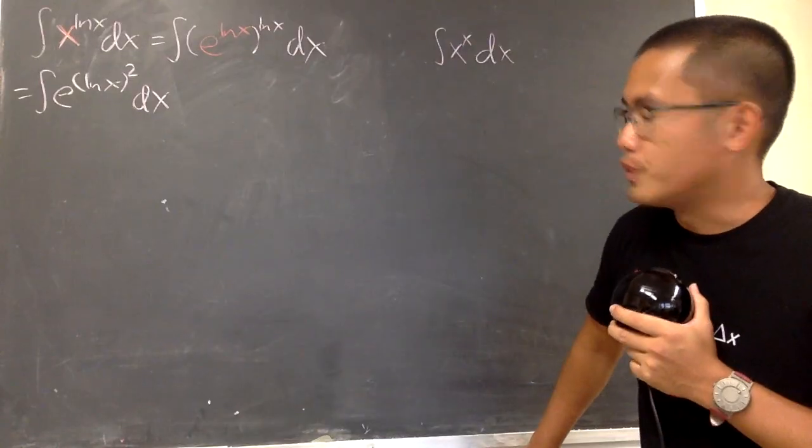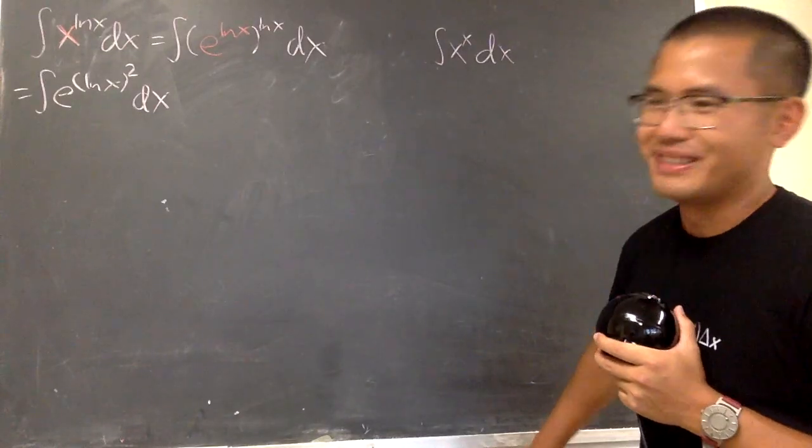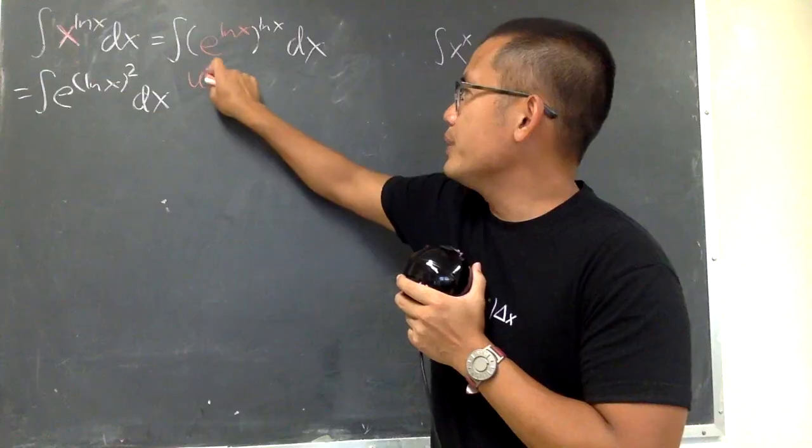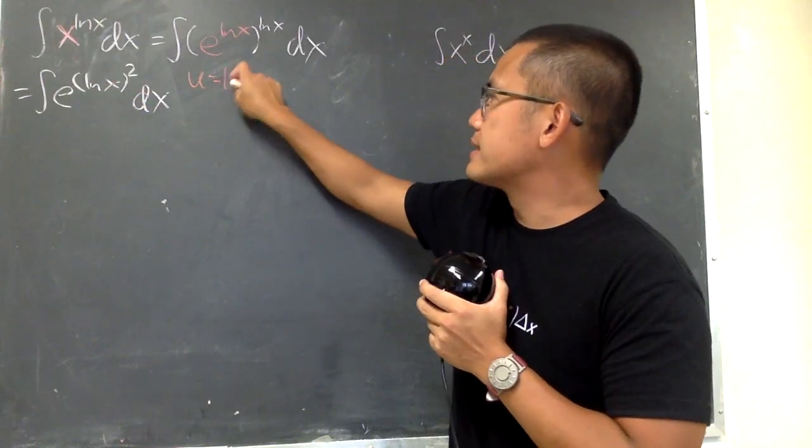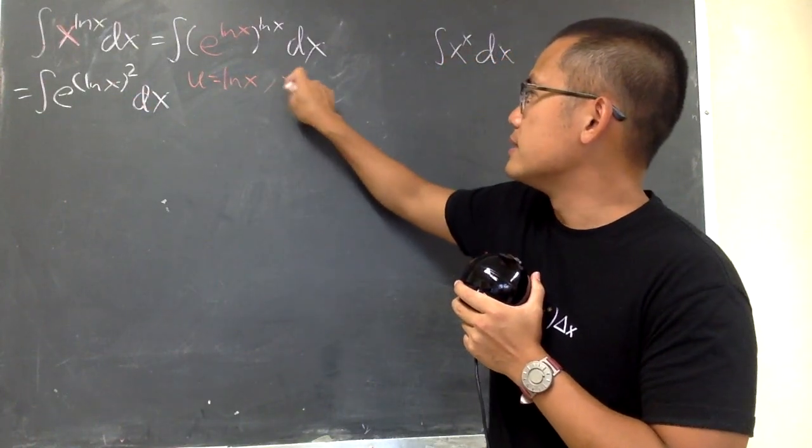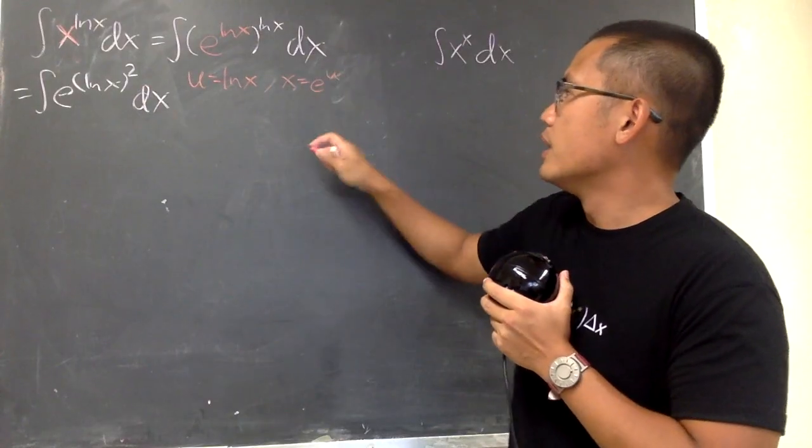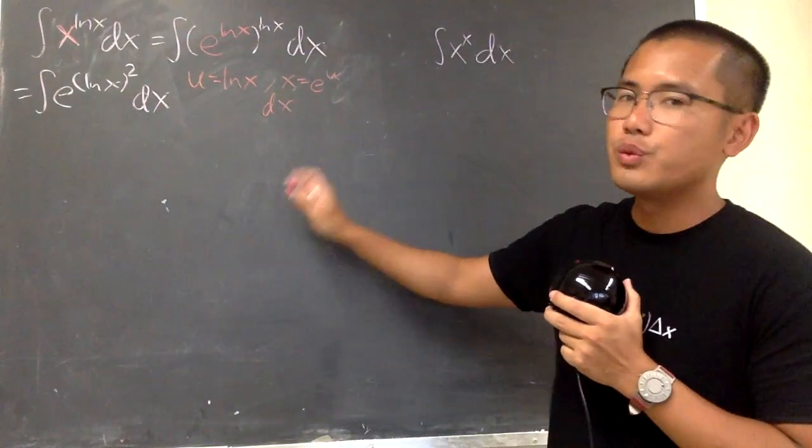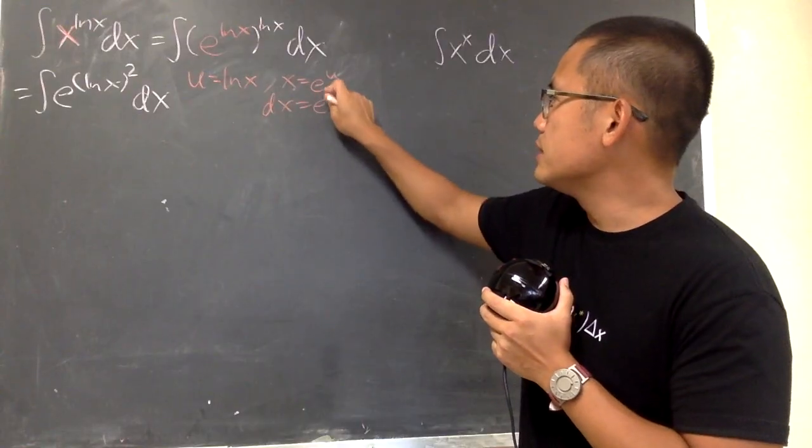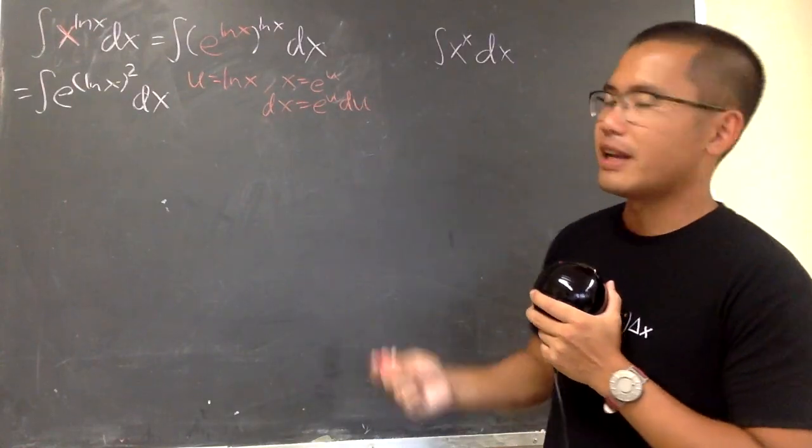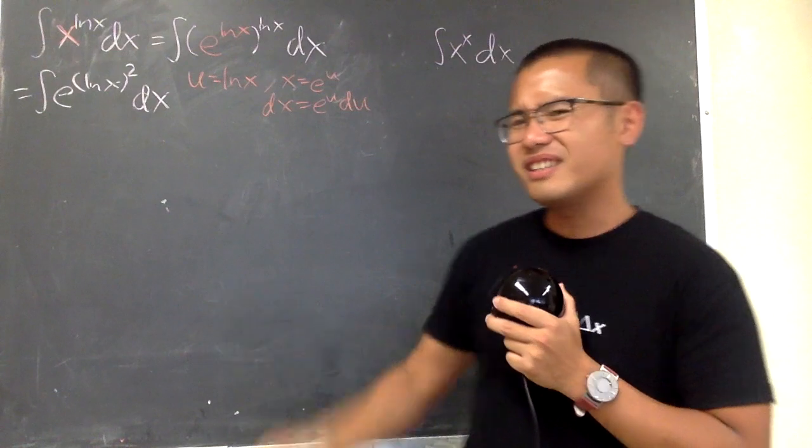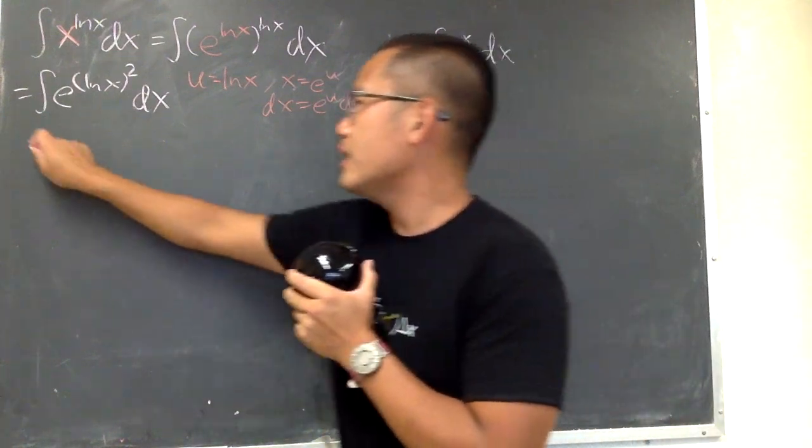What can we do now though? Just try u sub and see what happens. Let u equal to ln x. In this case, we know x is equal to e to the u. We see that dx is equal to the derivative of this, which is e to the u du. Very nice. Let's take this integral to the u world.